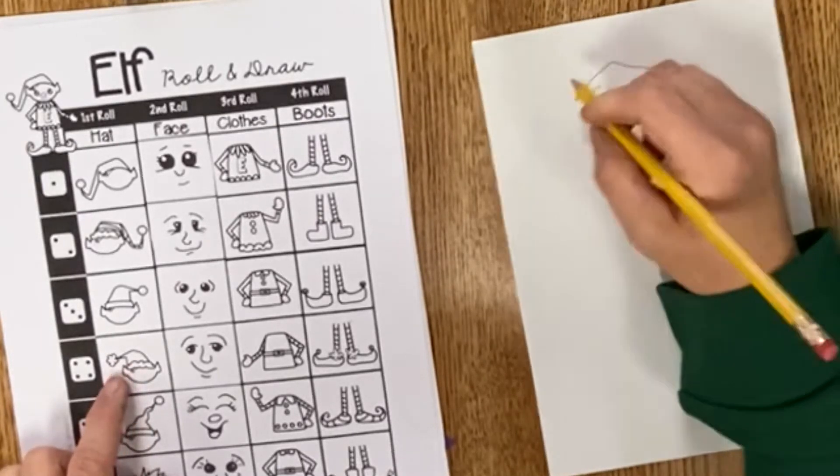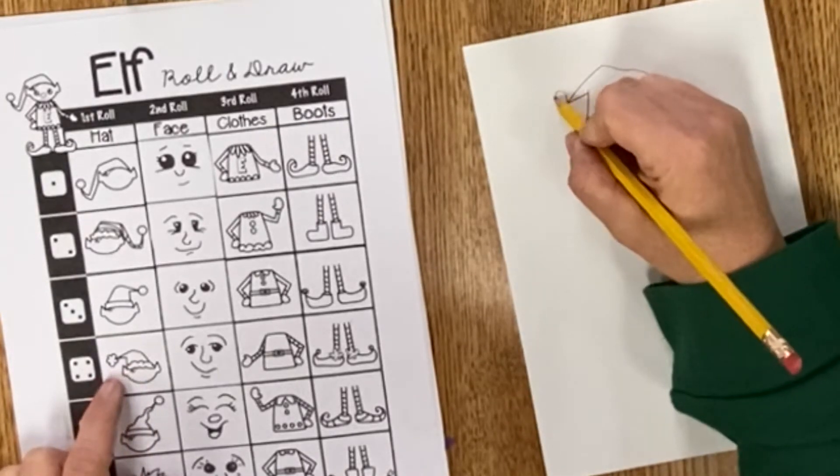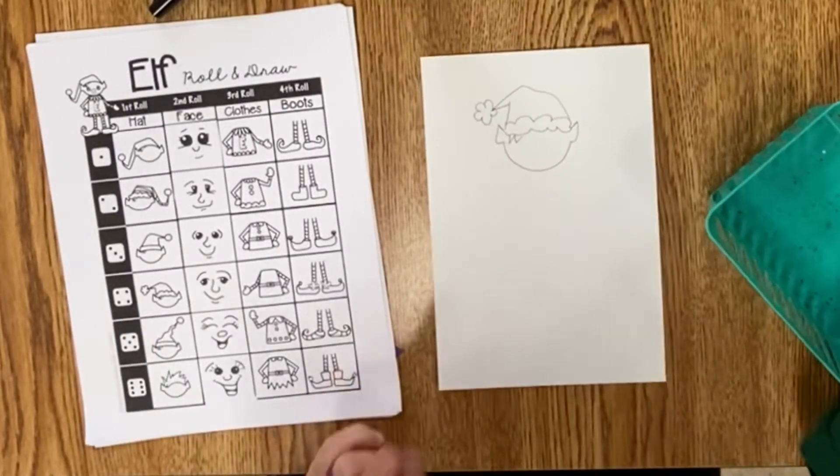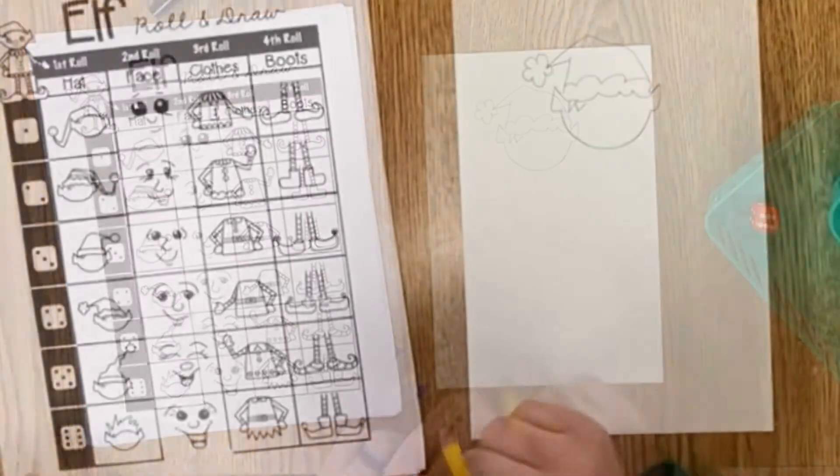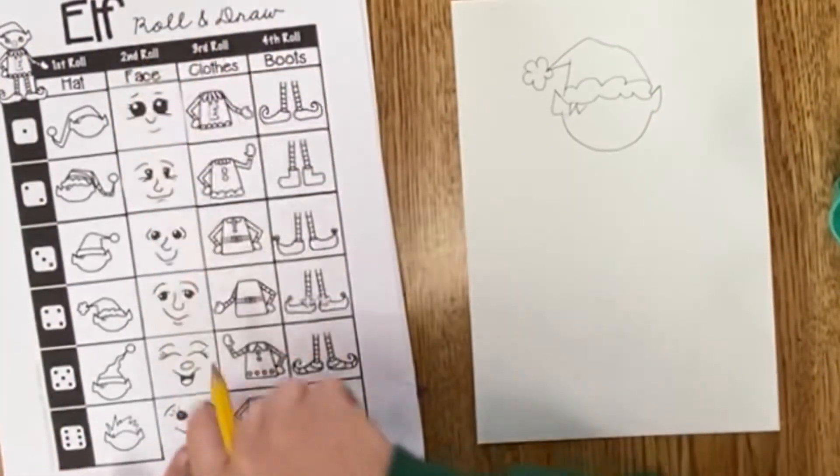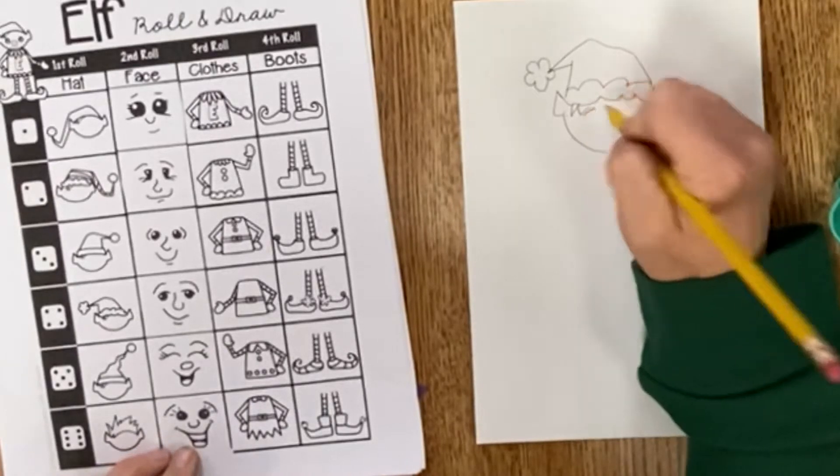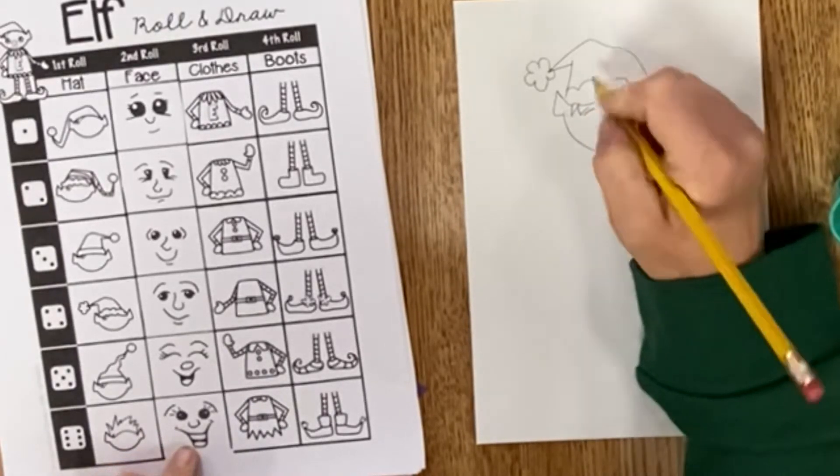You want to start off and make sure that first curved line is nice and big so that you have a big enough face that you can fit all of your facial features in—the eyes, nose, and mouth.